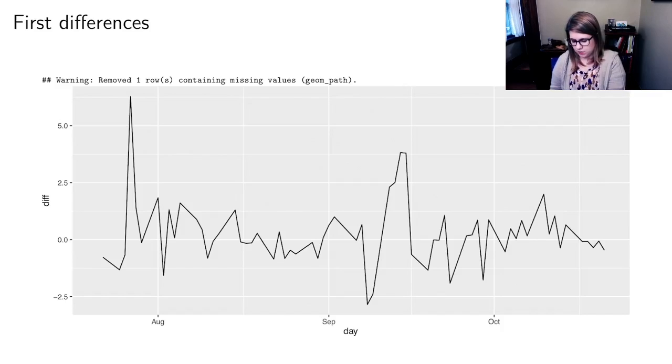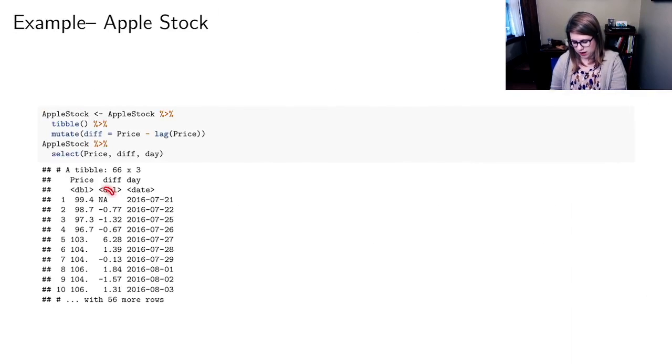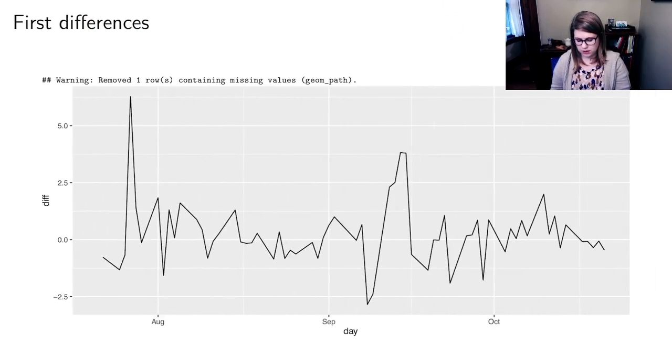This is the plot of those first differences. It says warning removed one row containing missing values, and that's because we never have the difference for the first row because there's nothing to subtract for that one. Or if we had second differences we would have two NAs at the beginning of our data. So this is just basically random noise.